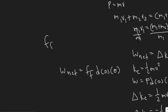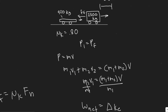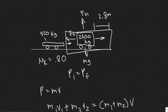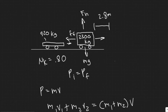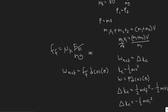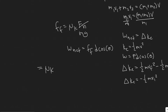We need to find the force of friction, which equals mu_k times F_n. We need the normal force. Since gravity acts downward and the normal force acts upward, and they cancel in the y-direction, we know F_n equals mg. So the net work is mu_k times mg times distance times cosine of theta.